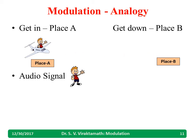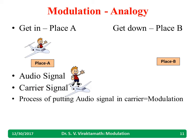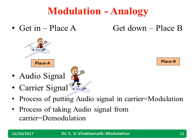So what to do? Use a carrier. Just as a person sits in the airplane and it flies, the audio signal sits on the carrier and the modulated signal can travel. The process of putting an audio signal onto the carrier — like sitting a person into an airplane — is nothing but modulation. At the receiver or place B, the reverse process happens: the audio signal is taken from the carrier, like getting down from the airplane — that is demodulation.